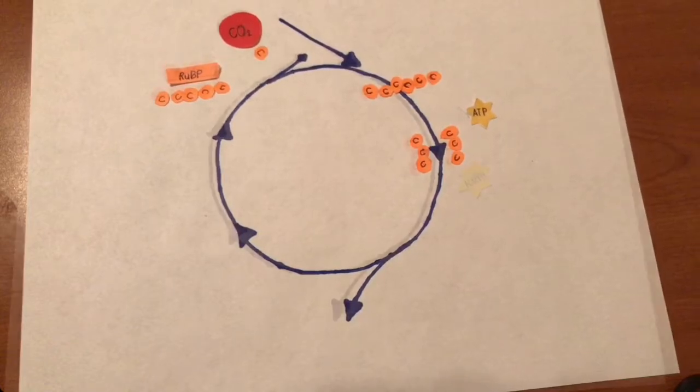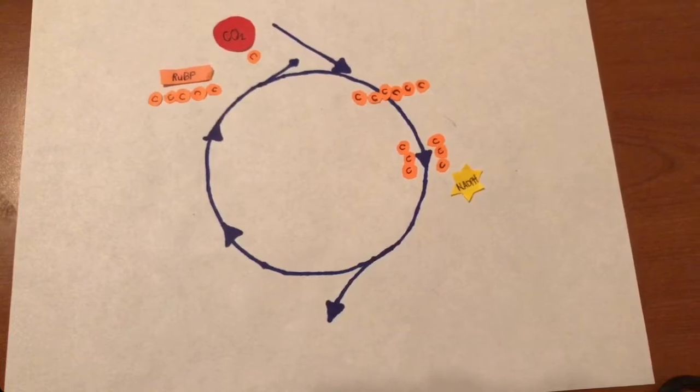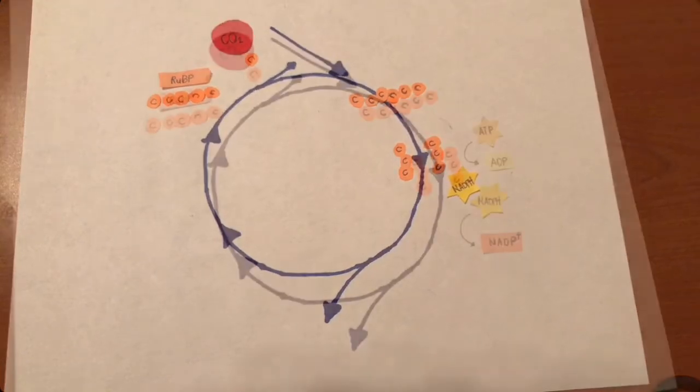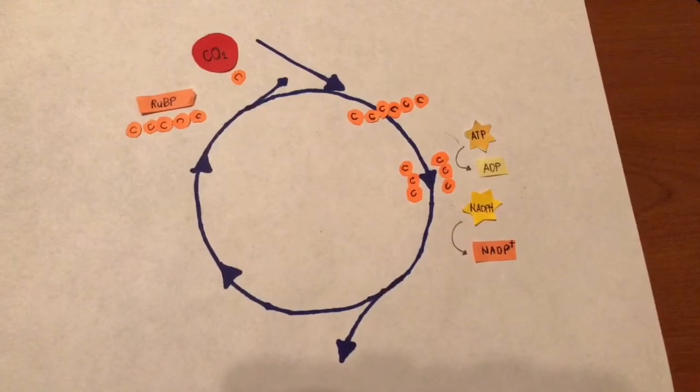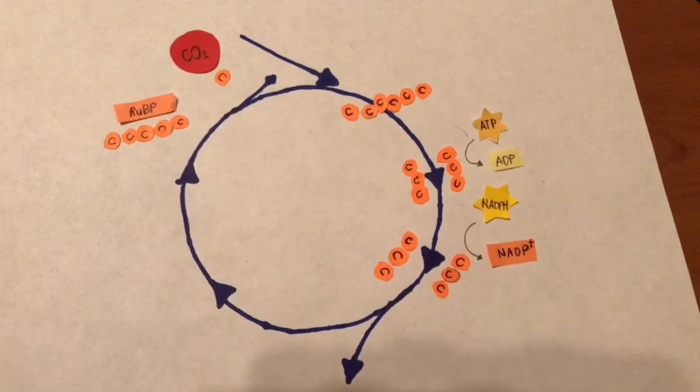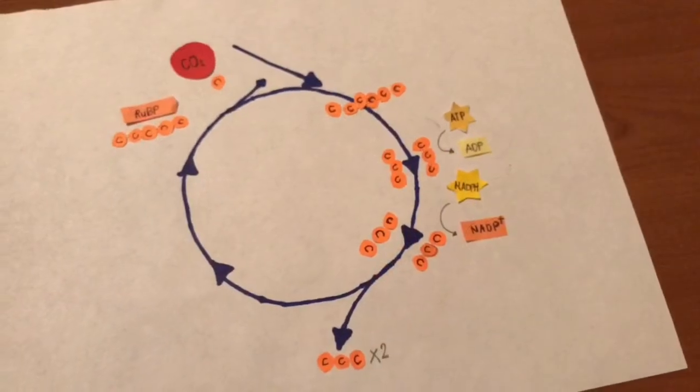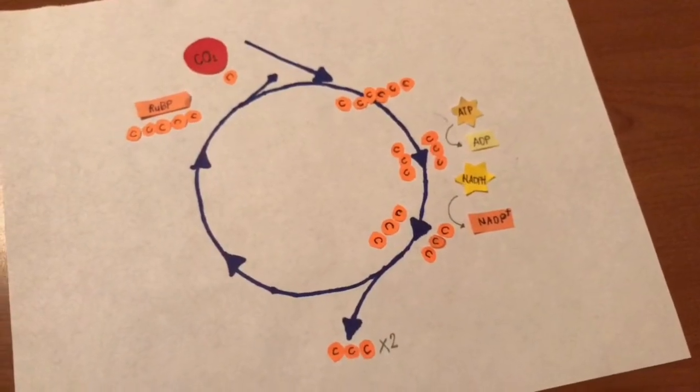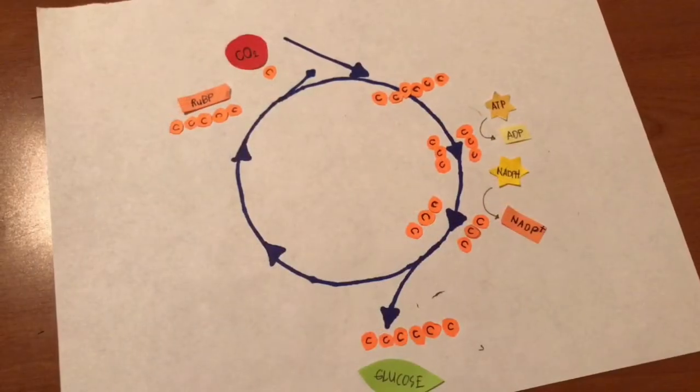The 3-PGA molecules move through a series of reactions and are converted. When several of these molecules are produced, some combine to make glucose while others are used to regenerate molecules in the cycle.